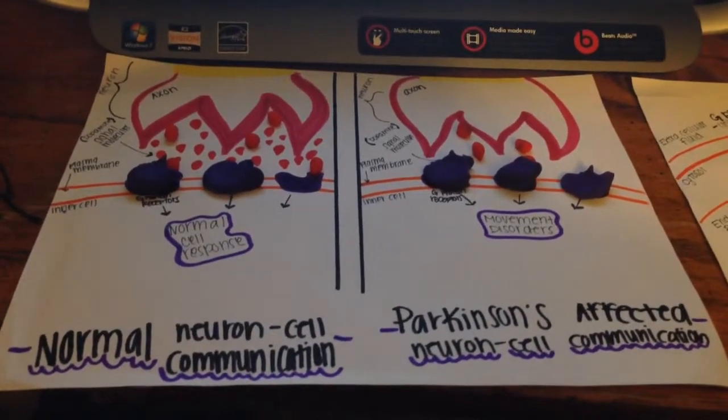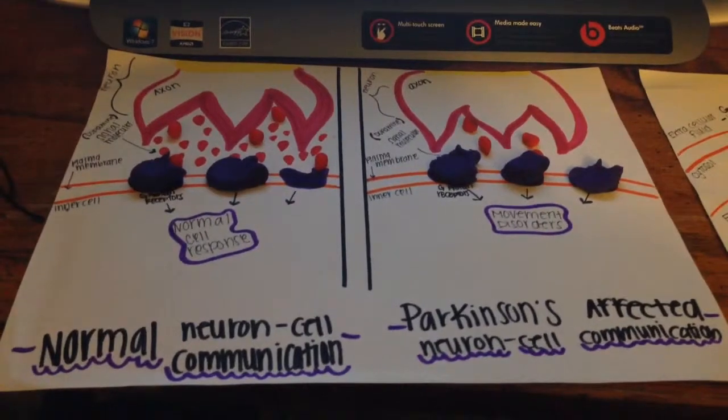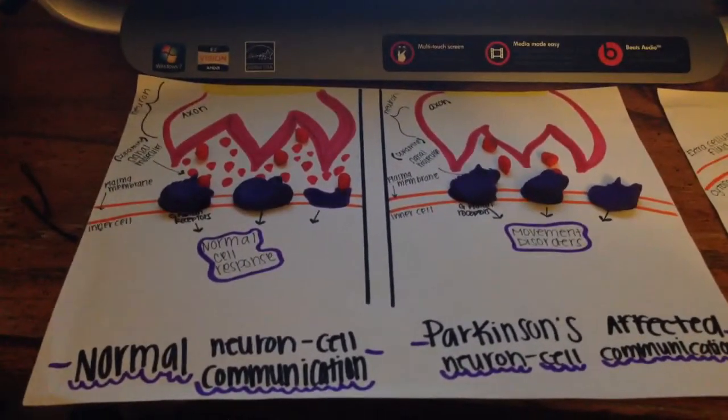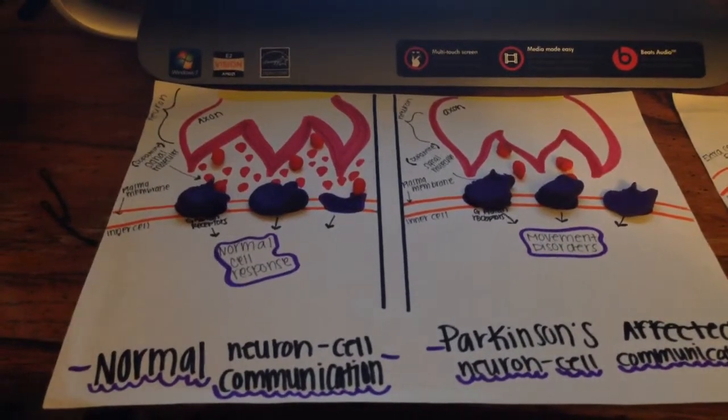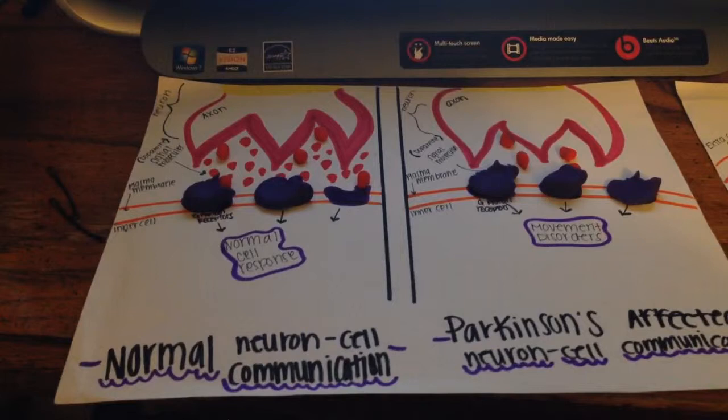Now let's talk about how cell signaling is related to Parkinson's disease. Parkinson's disease is a disorder of the brain involving the breakdown of nerve cells which affects the creation of dopamine.